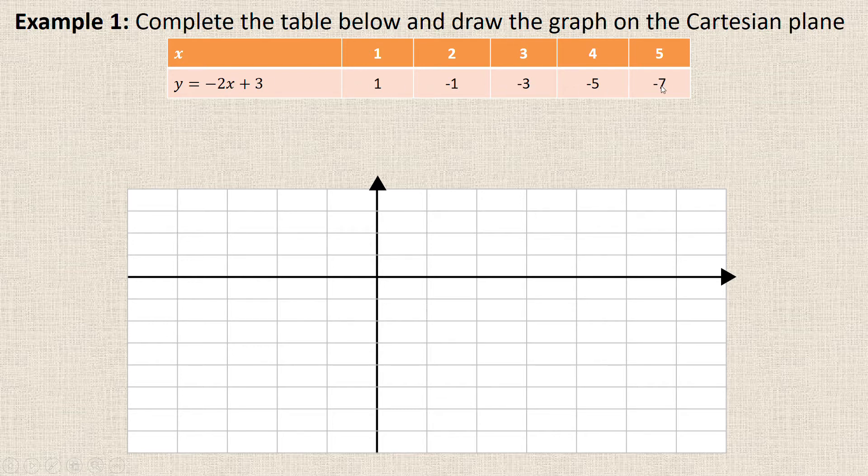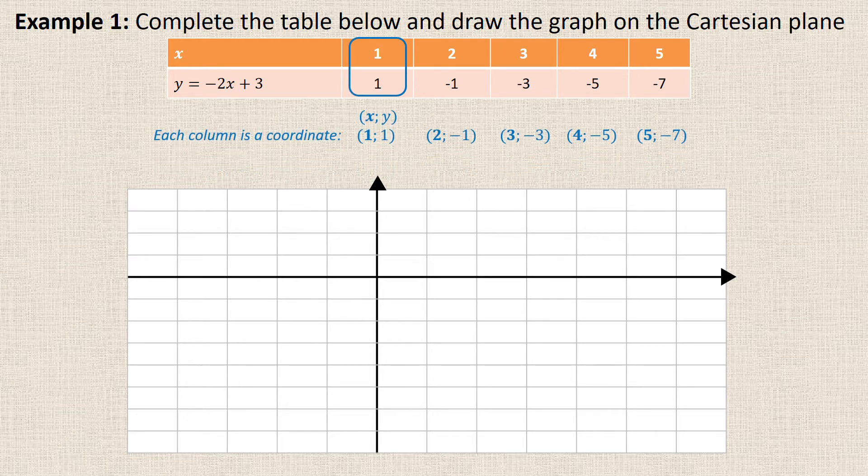Each of these columns is one coordinate pair. For example, my coordinate pair here would be (1, 1). These are all my coordinate pairs: (1, 1), (2, -1), (3, -3), etc. There's my x value, there's my y value. Remember this line here is your y axis.